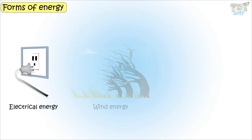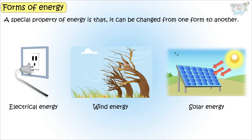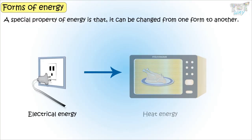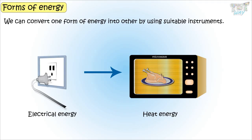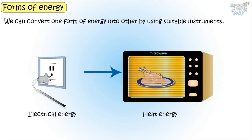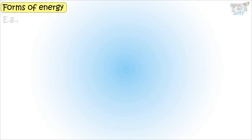All living things need proper food to obtain energy to carry out various activities. Now let's learn forms of energy. There are many forms of energy and all forms of energy are capable of doing some work. A special property of energy is that it can be changed from one form to another. We can convert one form of energy into another by suitable instruments.